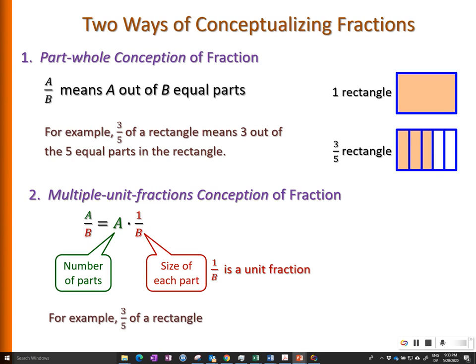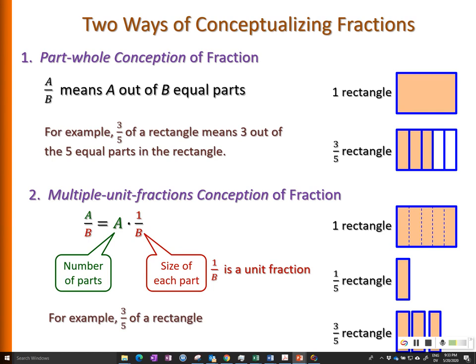For example, three-fifths of a rectangle can be understood as there are three parts and each part has a size of one-fifth of the rectangle. That means there are three pieces and each piece is one-fifth of the rectangle.